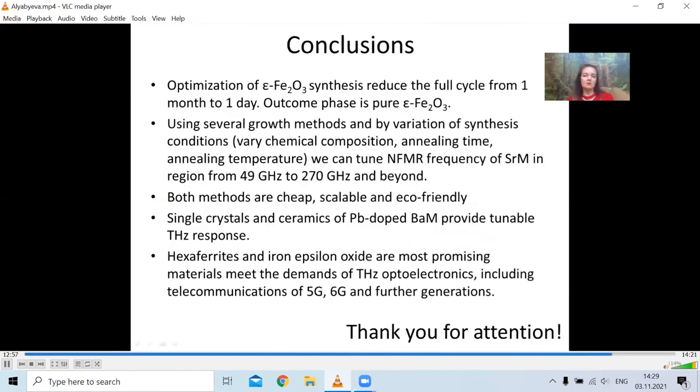In conclusion, once we've optimized the growth conditions of epsilon iron oxide, we were able to reduce the time of the synthesis from full cycle from one month to one day. And the outcome phase consists almost purely from epsilon iron oxide. Variation of growth technique methods and of conditions of these methods allowed us to vary the position of the natural ferromagnetic resonance of strontium hexagonal ferrite in the region from 49 GHz up to 270 GHz and beyond.